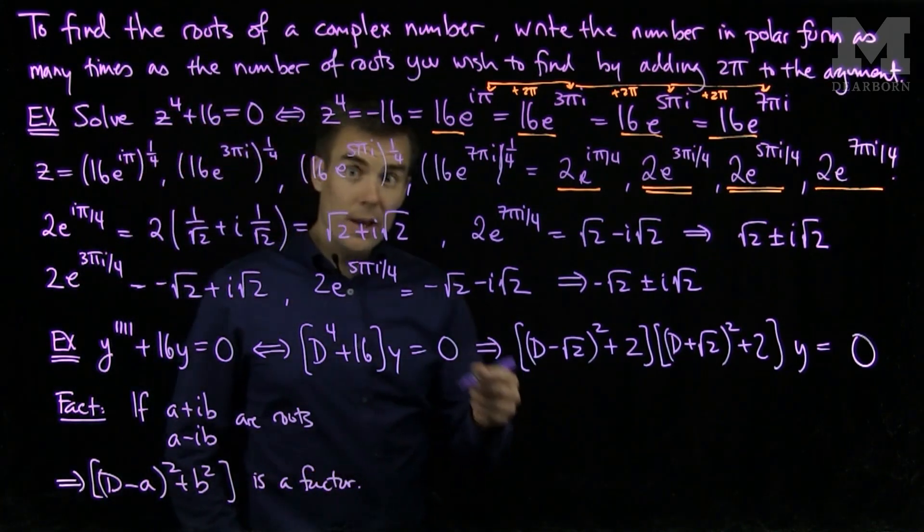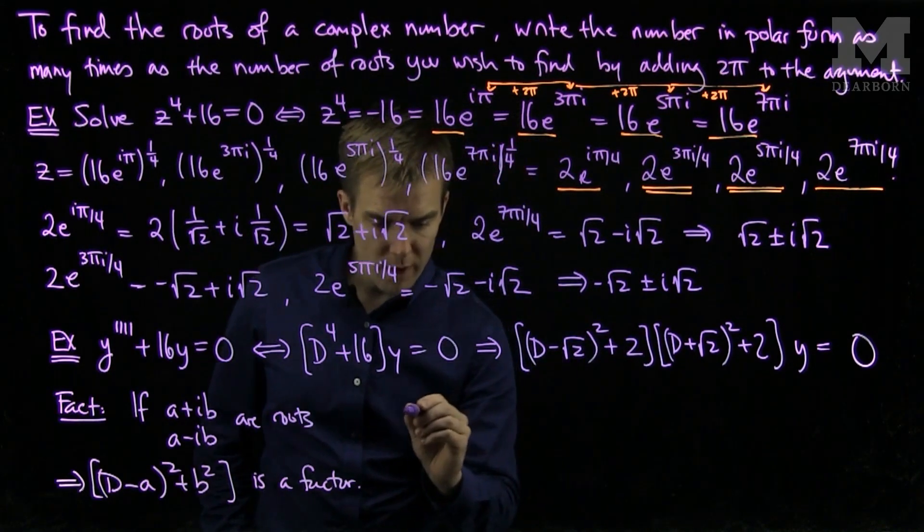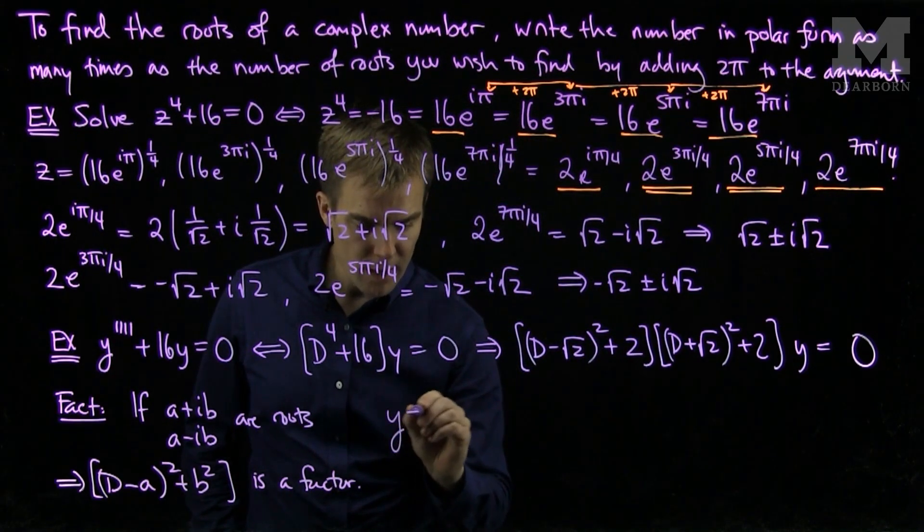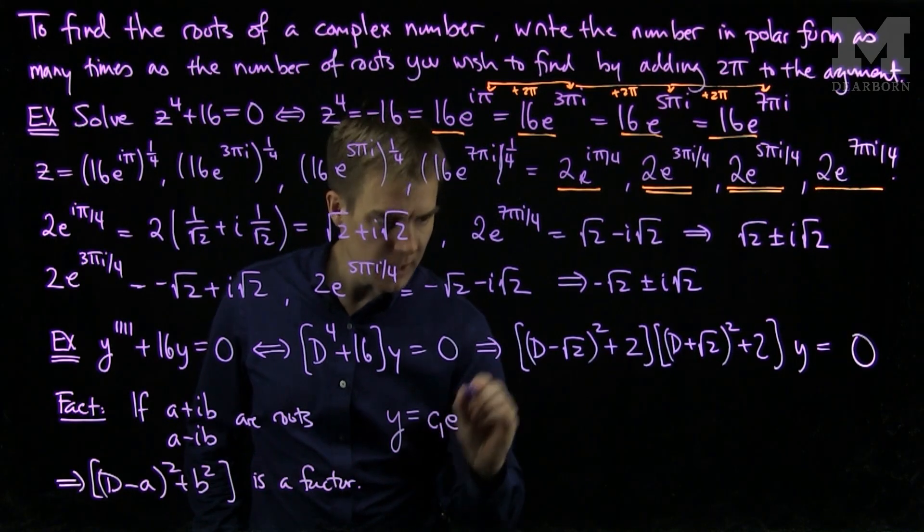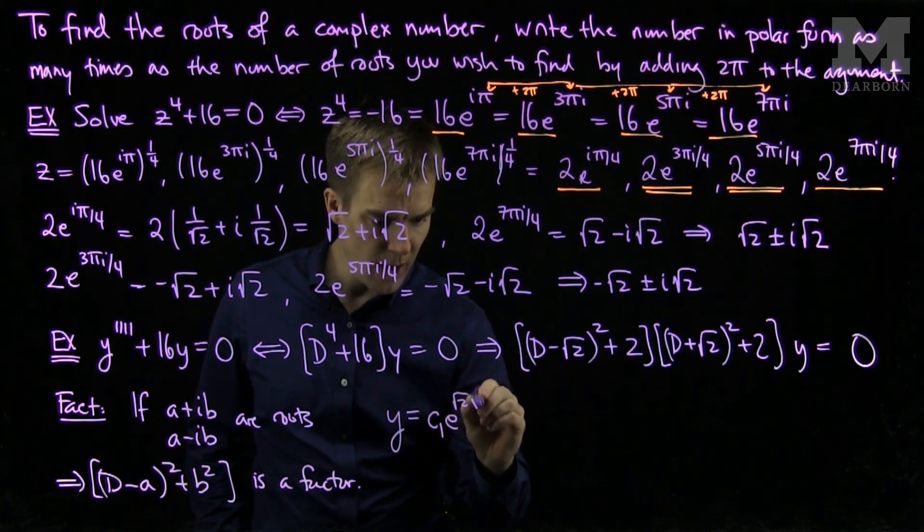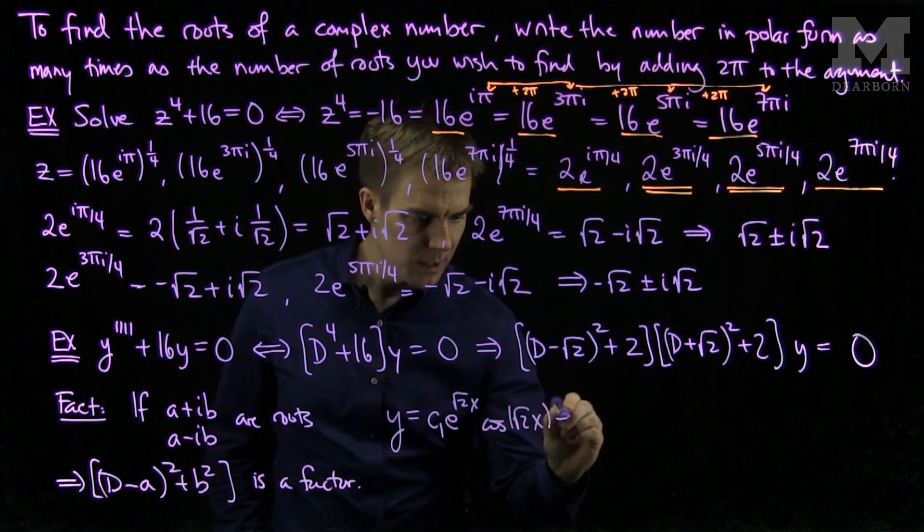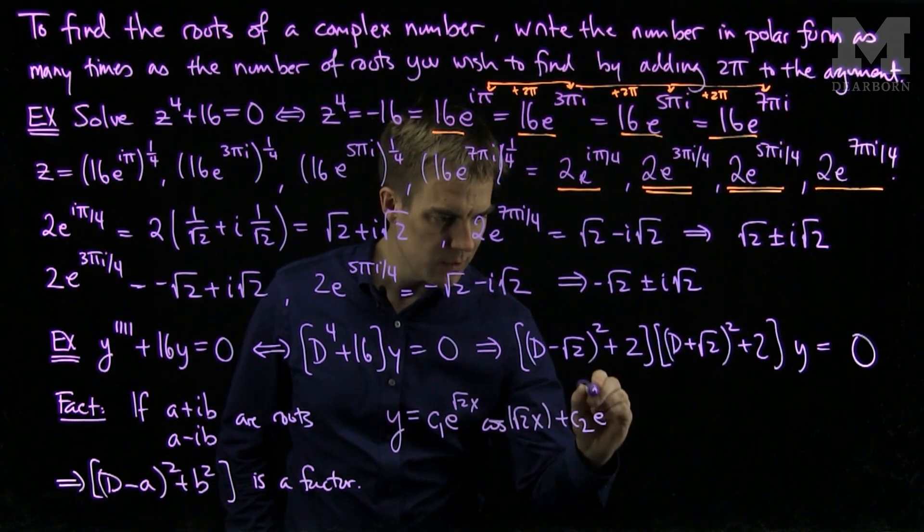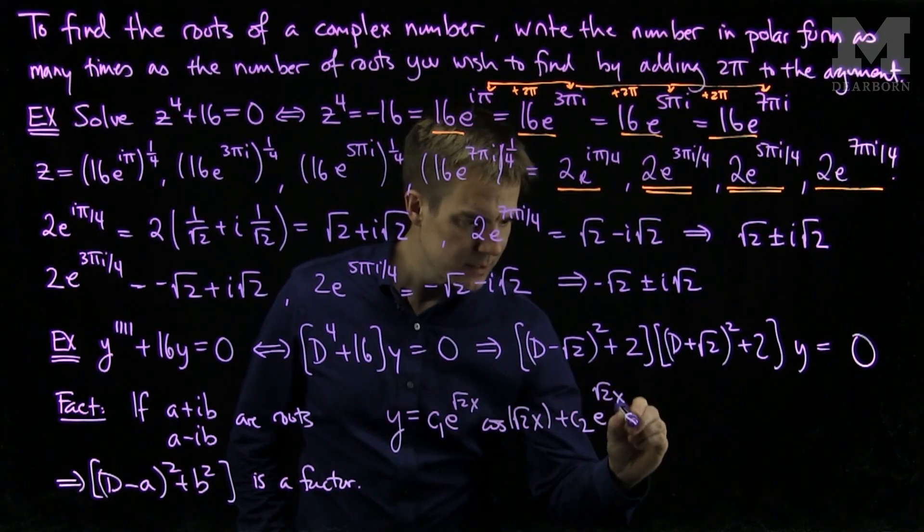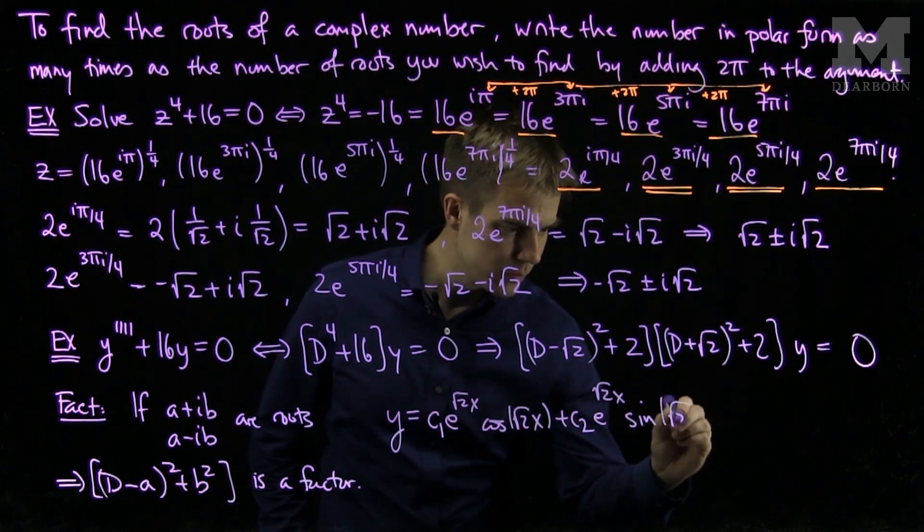Now, I can write down the general solution of this ordinary differential equation. I see that y will be equal to c1e to the root 2x cosine of root 2x plus c2e to the root 2x sine of root 2x.